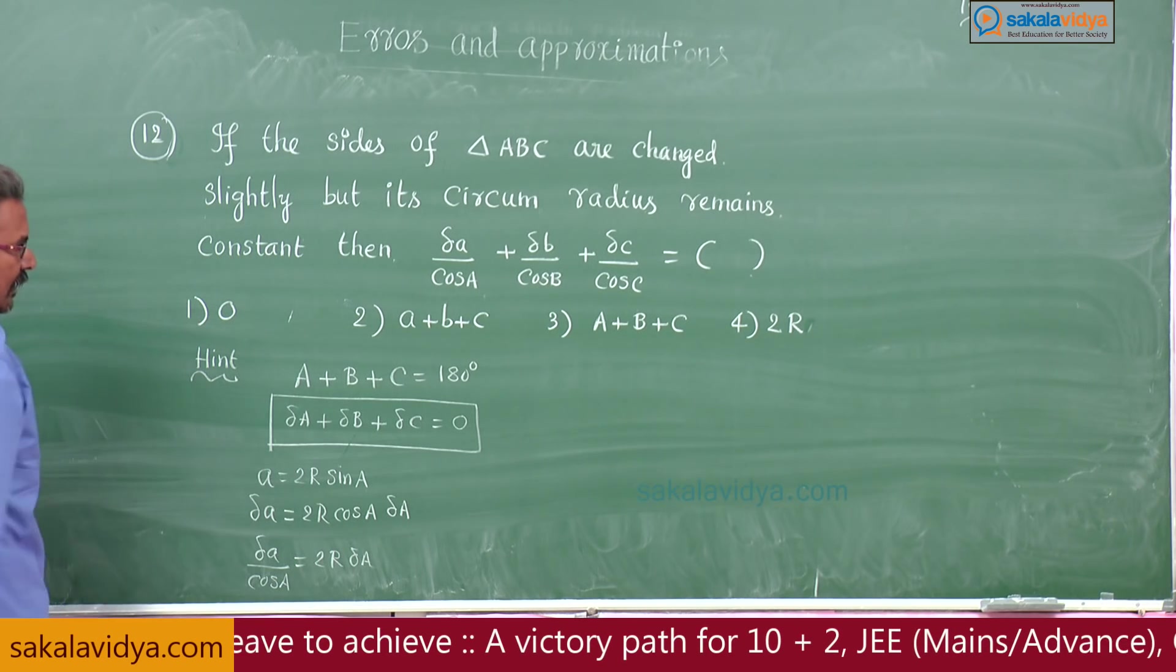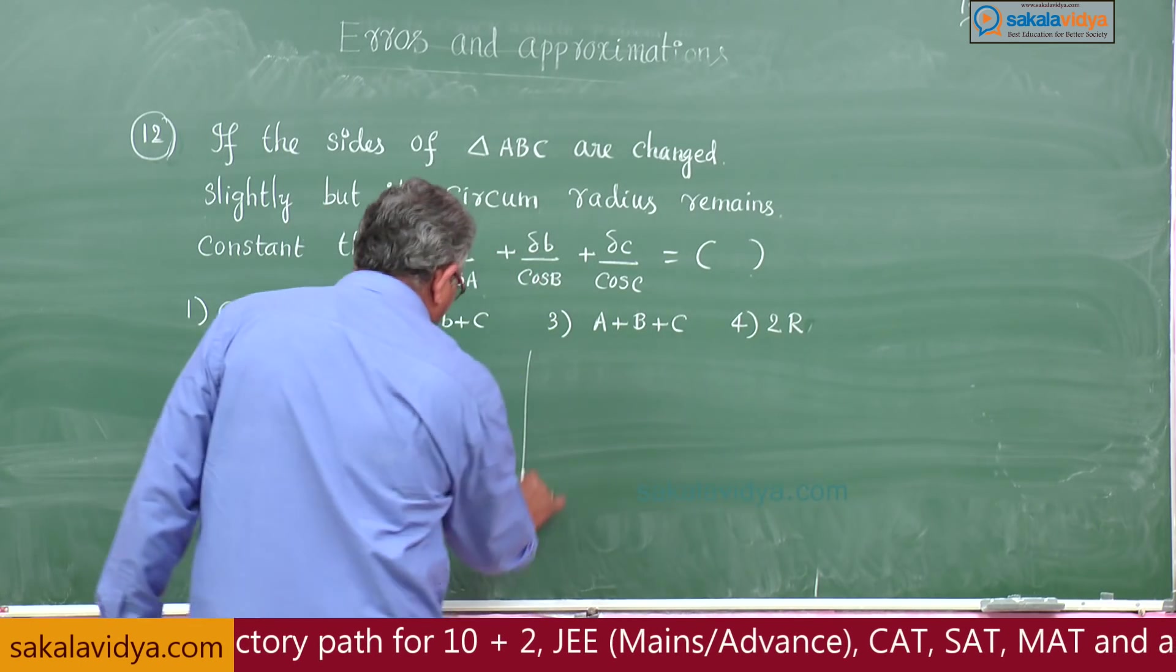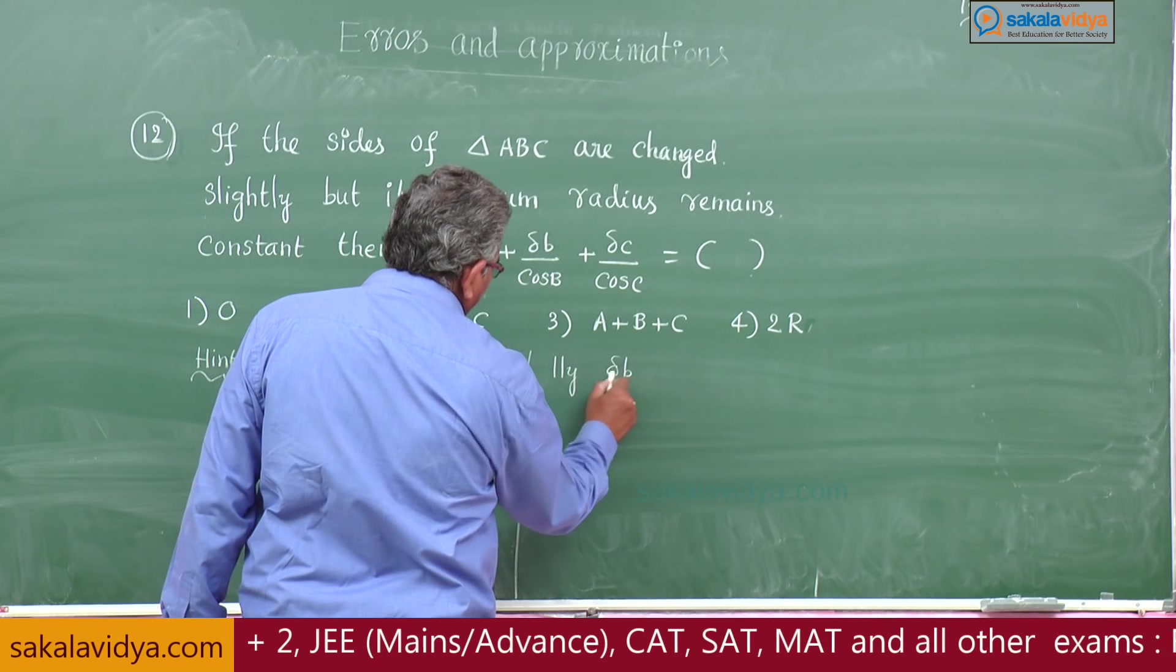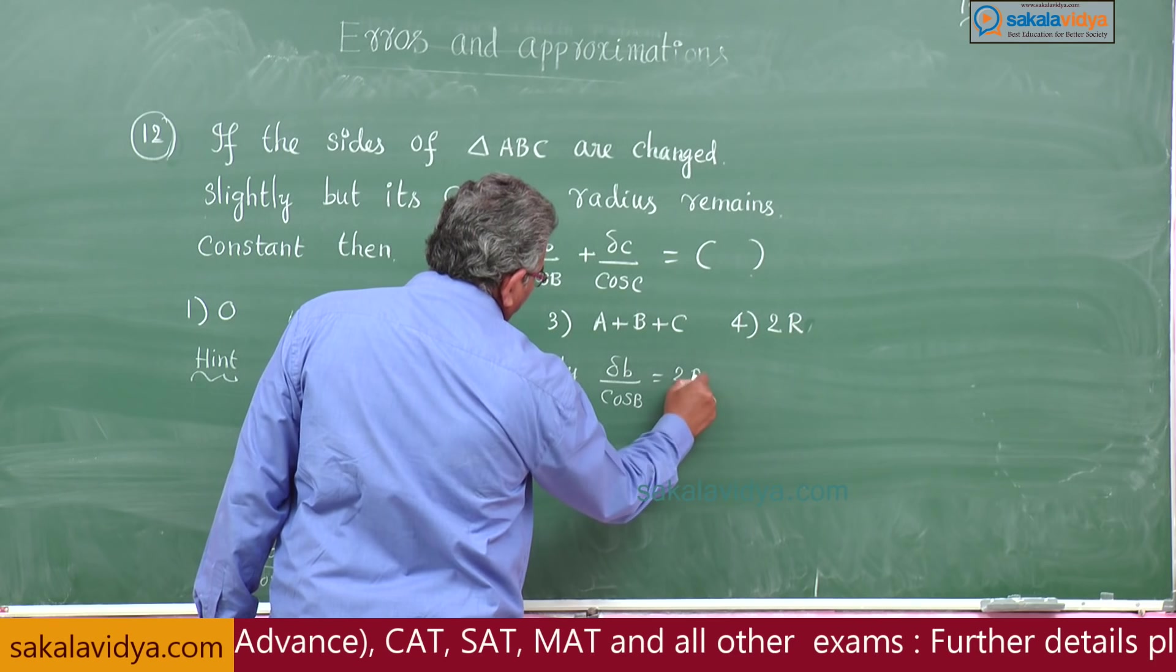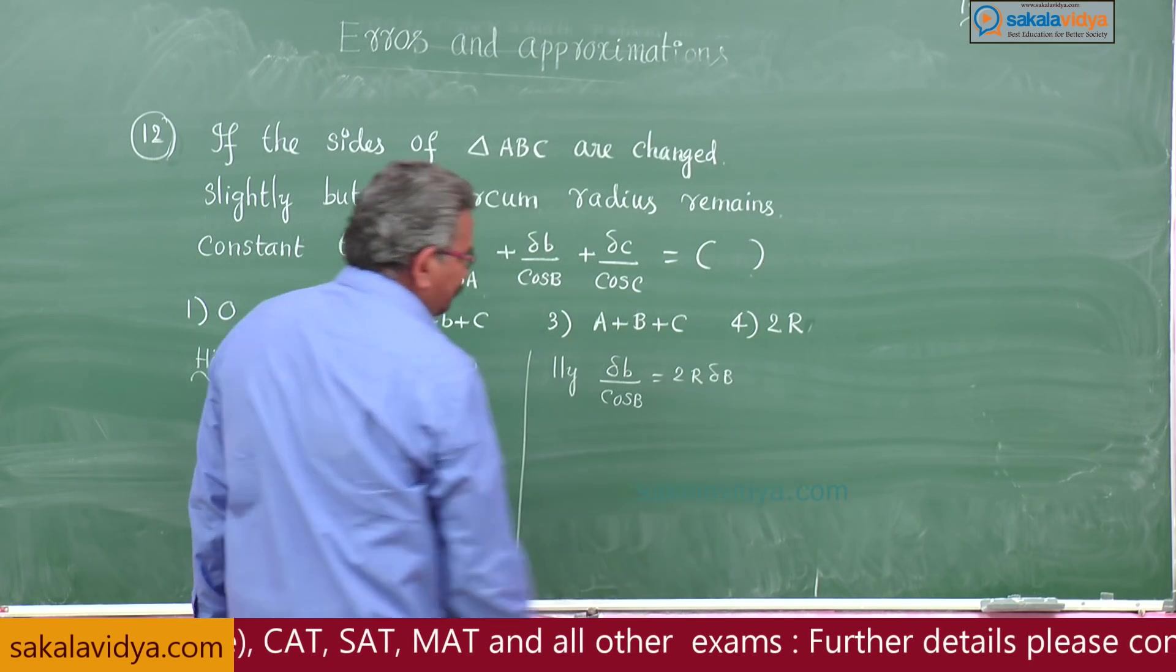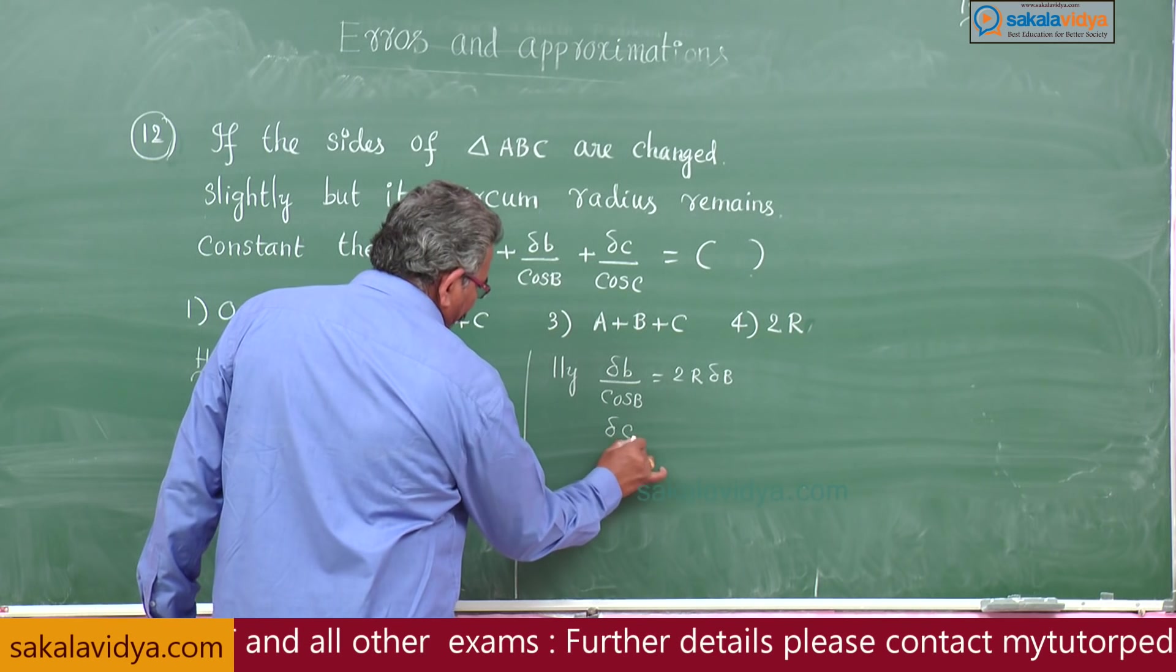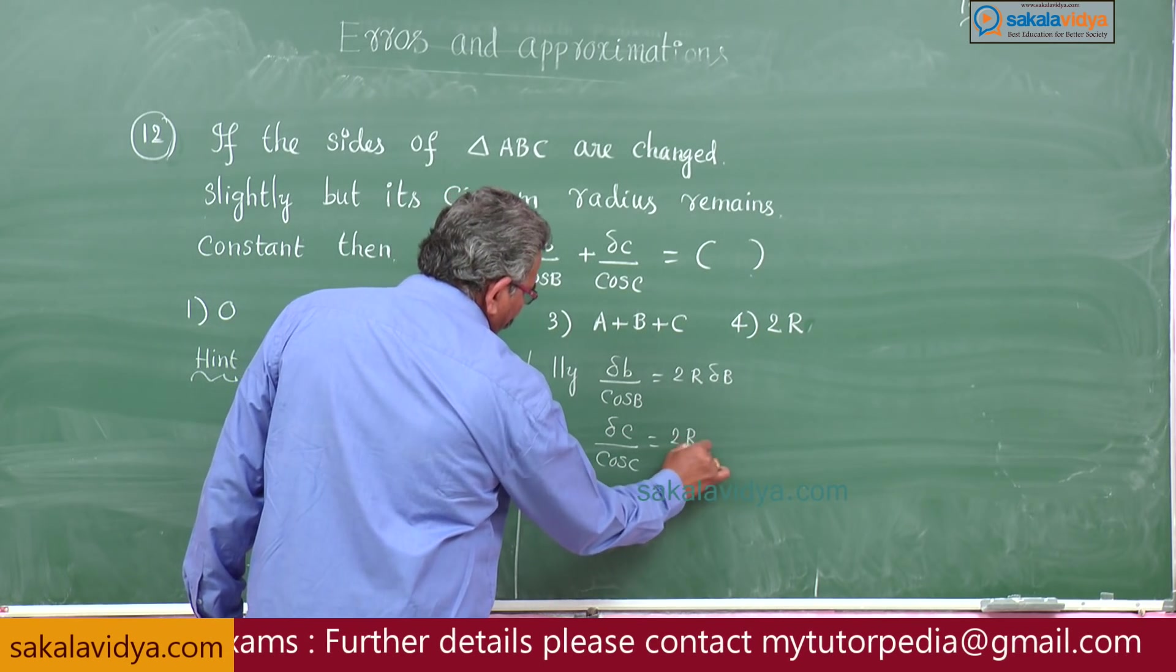Now you can write like this: delta A by cos A is equal to 2R delta A. Here 2R is the circumradius, that is constant. Similarly, delta B by cos B is equal to 2R delta B is equal to 2R delta C.